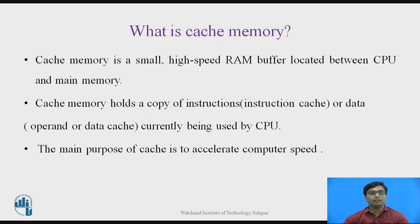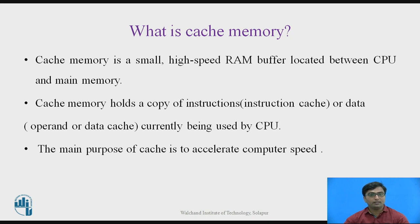What is Cache Memory? Cache Memory is a small and high-speed RAM that is located between the CPU and Main Memory. This memory is small compared to the Primary Memory and Secondary Memory, and its speed is high compared to the Primary Memory. The Cache Memory holds a copy of instructions that are currently being executed.